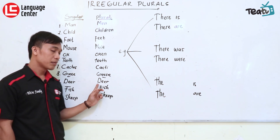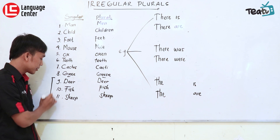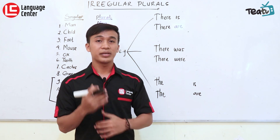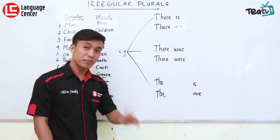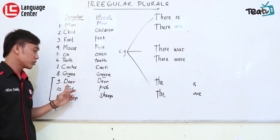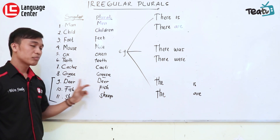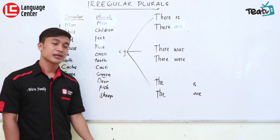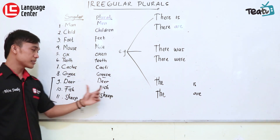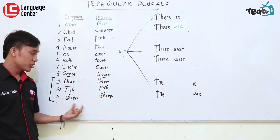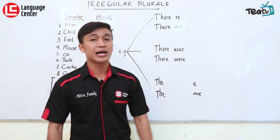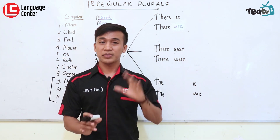Perubahan tiga kata yang terakhir ini — 'deer', 'fish', dan 'sheep' — kebetulan dalam bentuk tunggal ataupun plural, mereka tidak ada perubahannya. Tanpa perubahan S, tanpa tambahan EN, atau apapun. Contohnya, 'deer' — satu atau dua, perubahannya sama. Yang kedua adalah 'fish' — ikan. Kalau ikannya banyak, bukan 'fishes', tetap menggunakan 'fish'. Yang ketiga adalah 'sheep' — tetap 'sheep'. Tiga ini tidak ada perubahan pluralnya, bentuk pertama sama dengan bentuk kedua.